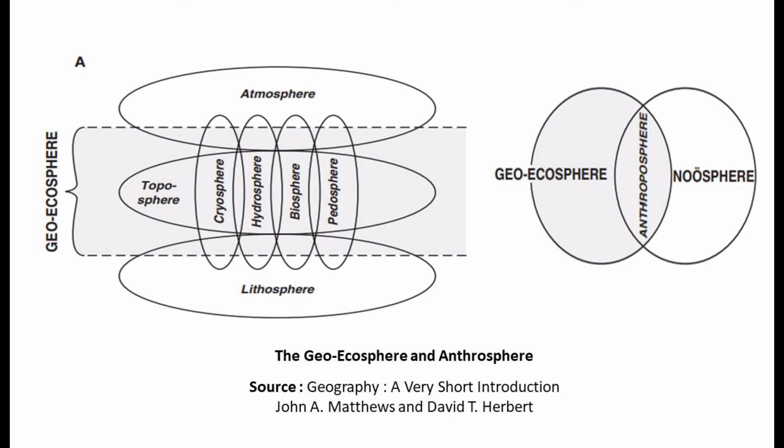The Geoecosphere defines the scope and subject matter of physical geography, so it is not wrong to say that the study of the Geoecosphere is the study of physical geography. The narrow zone that comprises atmospheric, cryospheric, hydrospheric, biospheric, and pedospheric phenomena — this narrow band of sciences is termed the Geoecosphere.